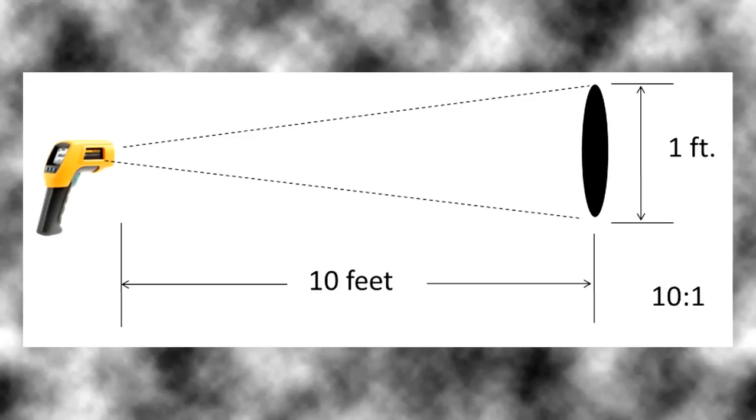Distance to spot ratio is used to express the ability of an infrared thermometer to measure the temperature of a surface from a distance.